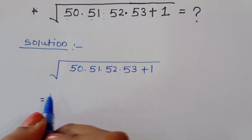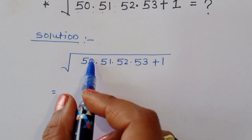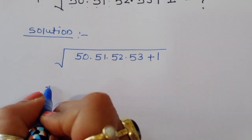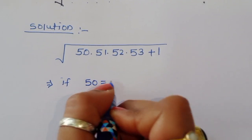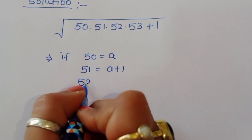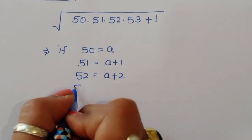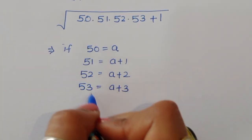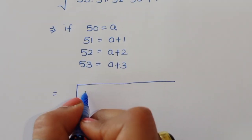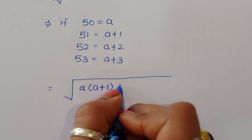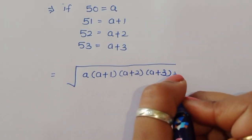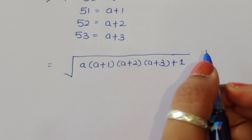Now, 50, 51, 52 — we can consider a variable. If we let a equal 50, then 51 is equal to a plus 1, 52 is equal to a plus 2, and 53 is equal to a plus 3. We can substitute these values, writing it as a times (a+1) times (a+2) times (a+3) plus 1.